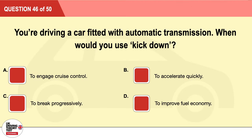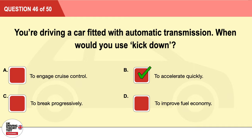Question 46: You're driving a car fitted with automatic transmission. When would you use kick down? A: To engage cruise control. B: To accelerate quickly. C: To brake progressively. D: To improve fuel economy. The correct answer is B: to accelerate quickly.